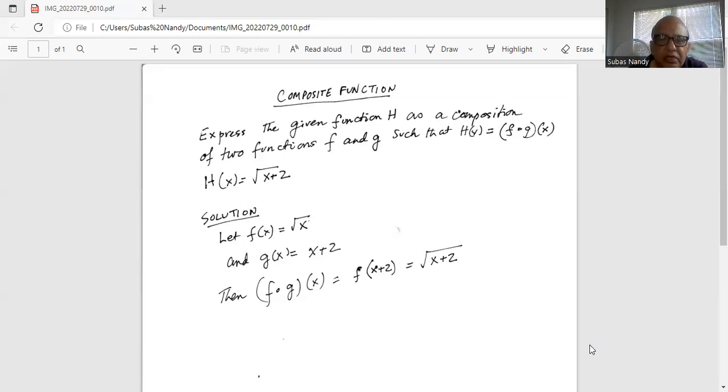Then F composite G of x is F of G(x), which is F of x plus 2. Wherever x is in the function, we replace it by x plus 2, so it will be square root of x plus 2. Hence the answer.